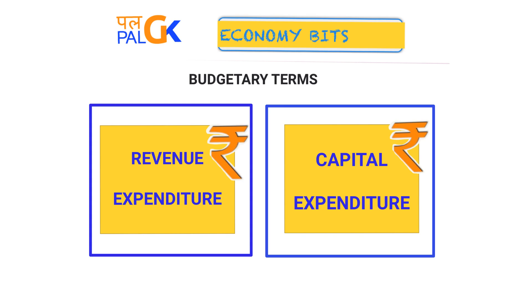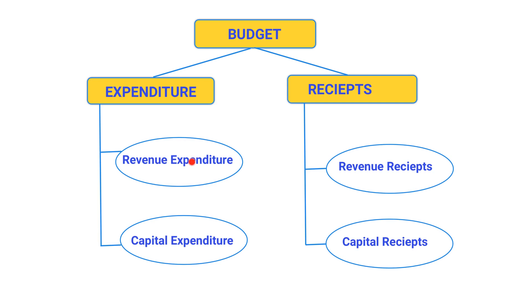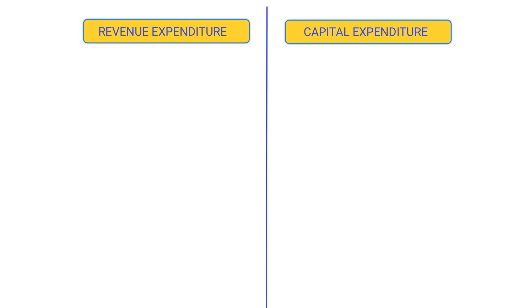Welcome to Palpalji ke Economy Bits. In this session we are taking up budgetary terms: revenue expenditure and capital expenditure. When we talk about the budget or fiscal policy of the government, we are talking about the expenditure side and the receipt side — how much and from where the government receives receipts, and how much it makes in expenditure. This expenditure and receipts can be classified into revenue expenditure, capital expenditure, revenue receipt, and capital receipt. So let's see how capital expenditure differs from revenue expenditure.